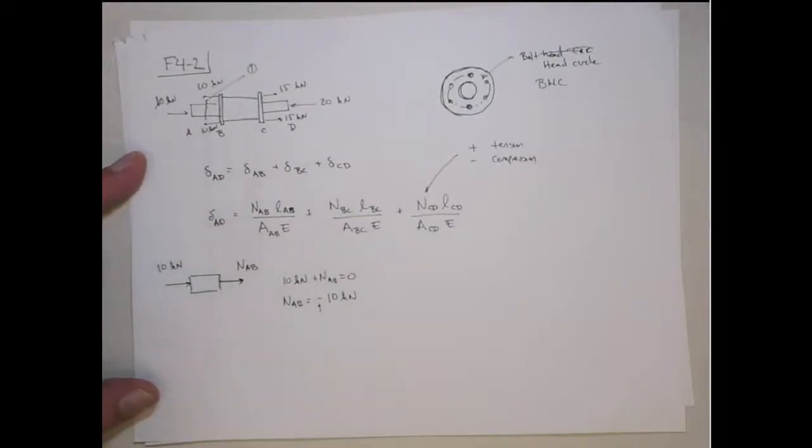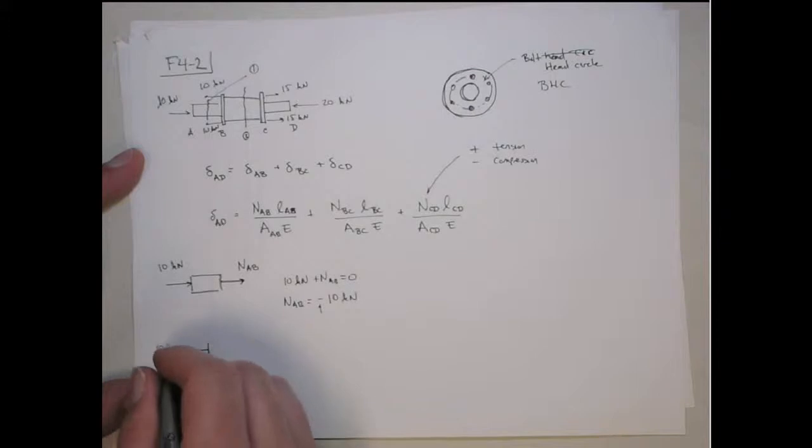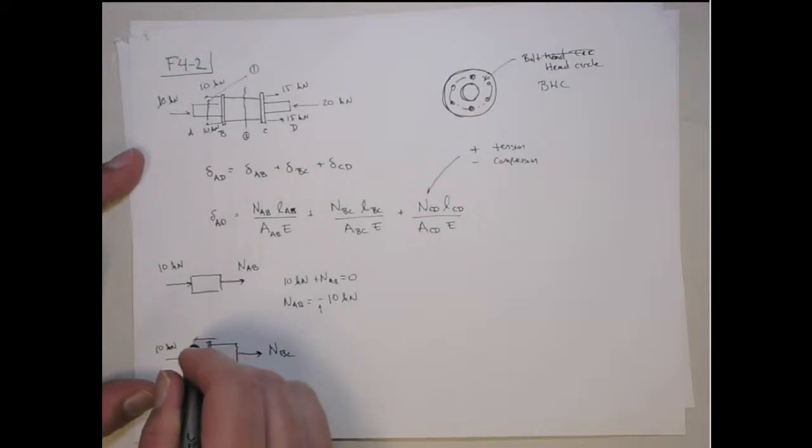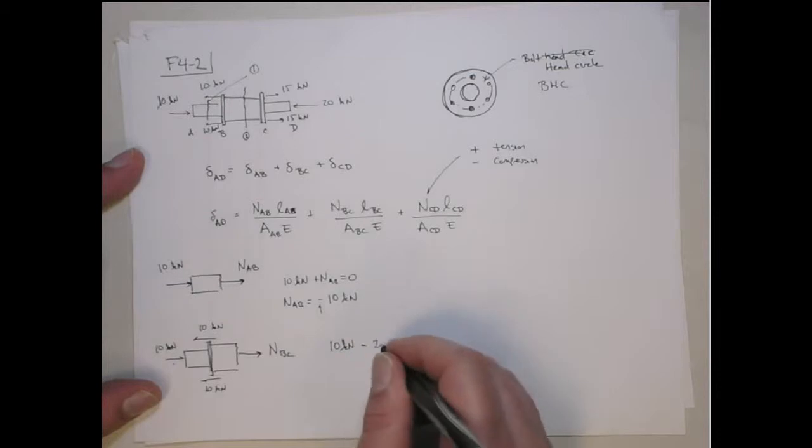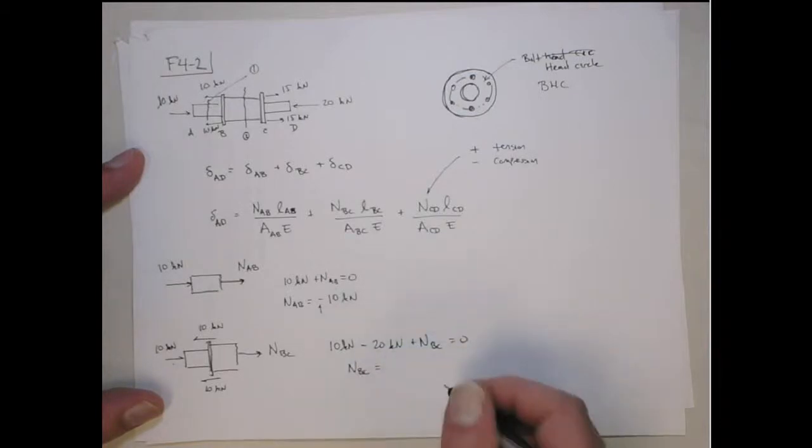Let's do the same thing for the second cut here. Let's go through BC. So that looks as follows. We have the 10 kN acting there. Here's the cut. So again, the internal reaction forces assume positive in tension. So this is NBC. And we have forces at the flange, 10 kN and another 10 kN. So we do sum of forces here. We get 10 kN from this one minus 20 kN. Just add these two together. Plus NBC equals 0. And that gives me NBC is, in fact, in tension of 10 kN. So it's a positive 10 kN.